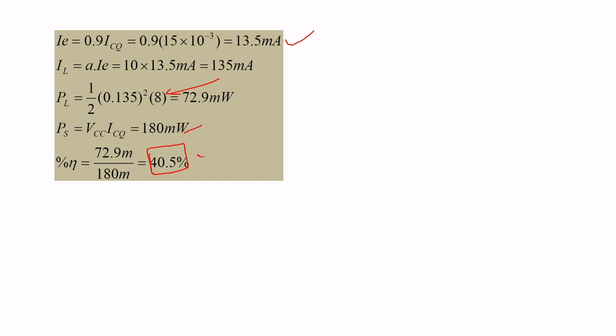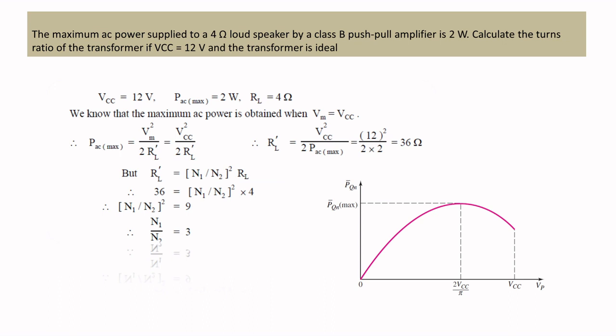Source power is P_source = VCC × ICQ = 12 × 15 milliamps = 180 milliwatts. Conversion efficiency is η = 72.9 / 180 = 40.5 percentage.